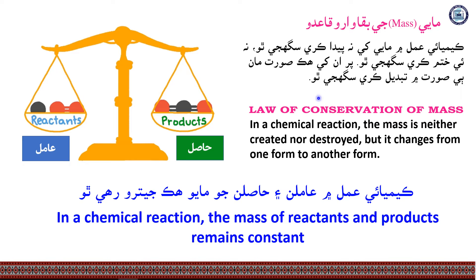In a chemical reaction, mass is neither created nor destroyed, but changes from one form to another. This is the Law of Conservation of Mass. In a chemical reaction, the total mass of reactants equals the total mass of products — they remain constant.